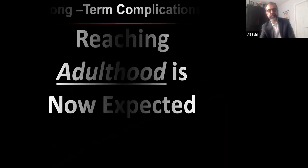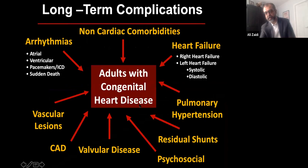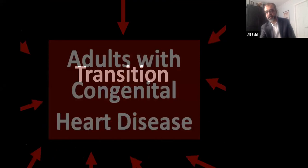In my world, these young children are not children anymore — they're adults in their 20s, 30s, and 40s. I follow adults in their 60s and 70s. But they have many cardiac and non-cardiac complications: heart failure, arrhythmias, pulmonary hypertension, valvular disease, psychological effects, and residual shunts. Arrhythmias is a big part of this — these are the long-term complications.